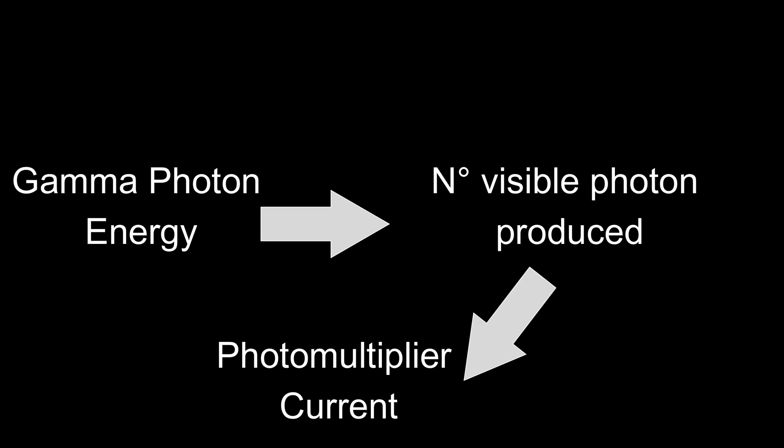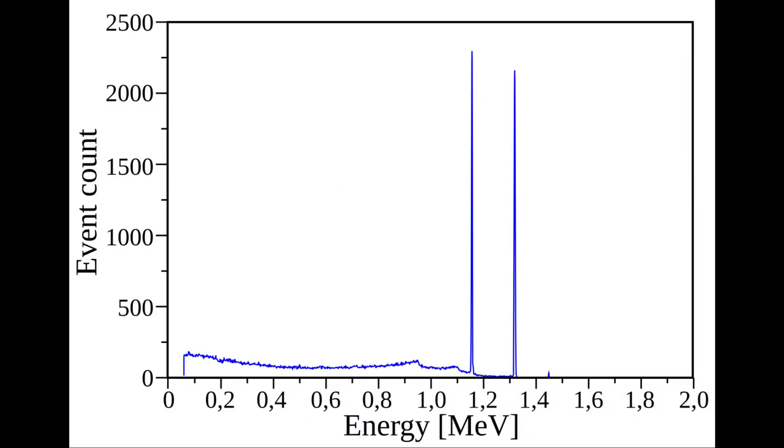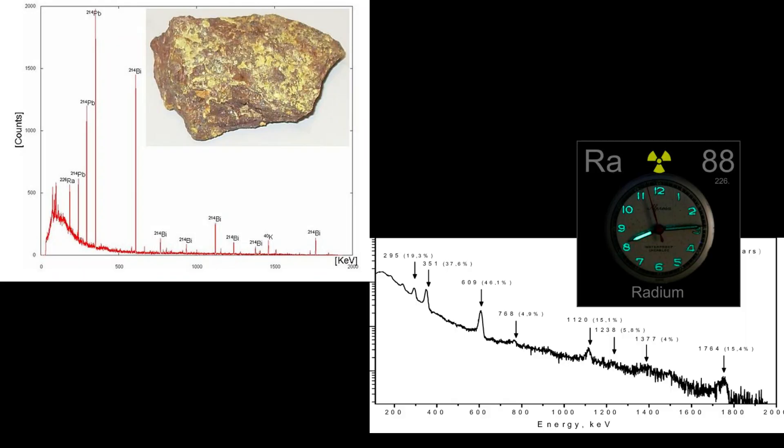This allows us to collect a large number of data which can be then used to build a spectrum in which there is the number of photons on the y-axis and on the x-axis the energy of each photon incoming. This spectrum is very useful because every radioactive material has a specific one like a digital fingerprint so it is possible to identify the radioactive substance based on it.